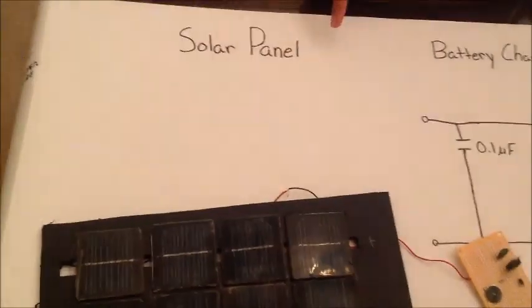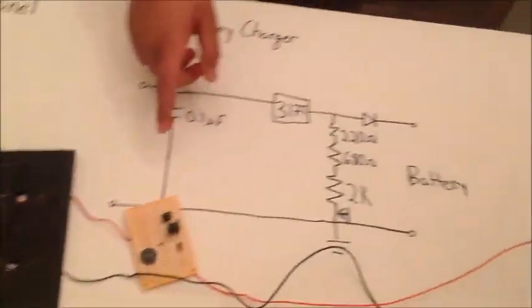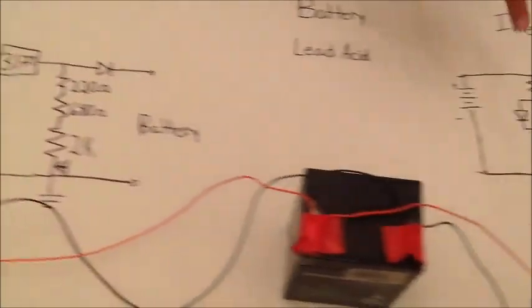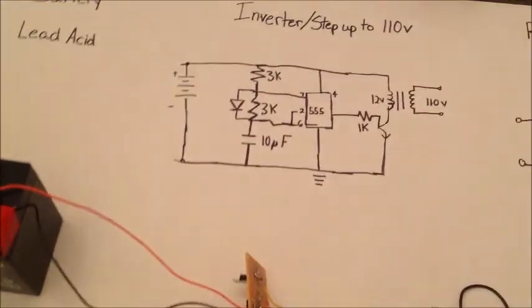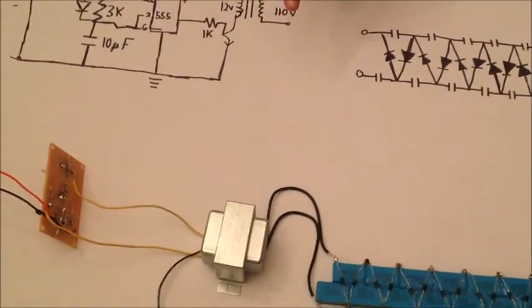Let me walk you through the electronics of my solution. First, the sun powers these solar panels, which charges the battery through this electronic circuit. And the voltage is then inverted from DC to AC and stepped up to 110 volts.